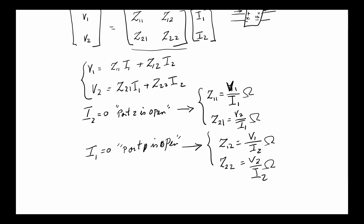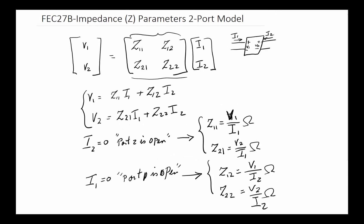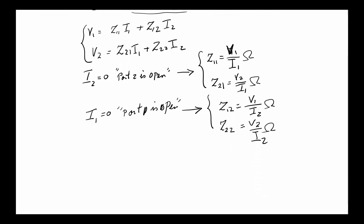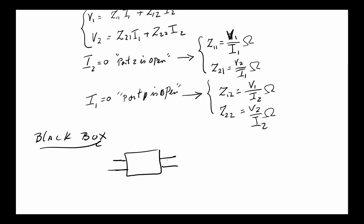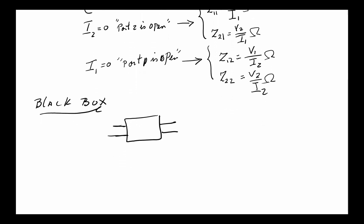These Z parameters fully define the two-port matrix. There are two approaches to finding them. The first is the black box approach: you are given a box with two ports exposed, and your task is to find the Z parameters without knowing what circuitry is inside.